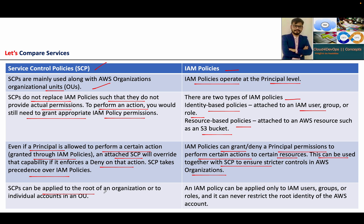SCPs can be applied to the root of the organization, individual accounts, or at the OU level. But IAM policies can only be applied to users, groups, or roles, and can never restrict the root identity of your AWS account. So SCP is applied to your OU or your account, but IAM is more towards your user groups or roles.